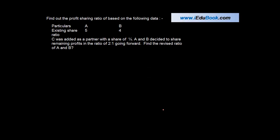Find the profit-sharing ratio based on the following data: particulars A, B. There are two partners A and B. The existing share of A is 5, the existing share of B is 4, or the ratio between them is 5 is to 4.